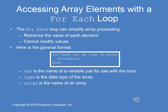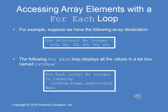Here we have an integer array declared and initialized with the values 10, 20, 30, 40, 50, 60. We can use the for each loop to display all the values in a list box. The code reads: for each int value as integer in int array — list show dot items dot add int val — next. And that will display each of the values in the list box named list show.